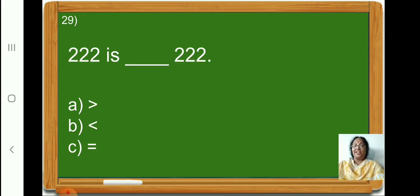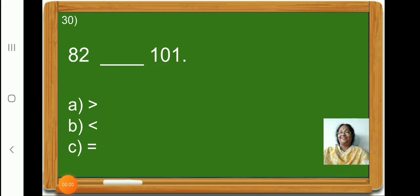222 is dash 222. Children, 222 is equal to 222. So, let us put a tick on option C, equal to. Children, 3 options are given here: greater than, smaller than, and equal to. We all know that 82 is smaller than 101. So, let us put a tick on option B, smaller than.